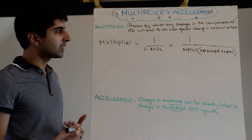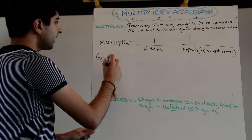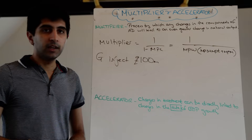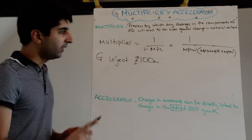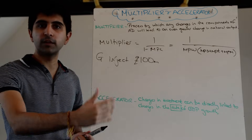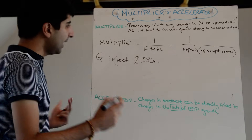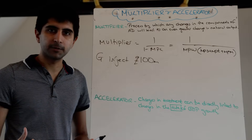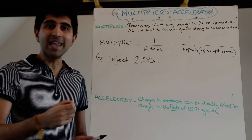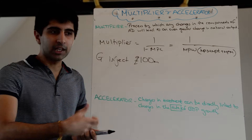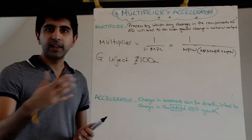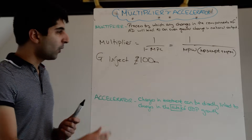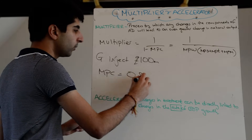Let's take an example. Let's say the government decides to inject £100 million into the economy. We know on a diagram that's going to shift AD to the right, but the final effect will not just stop at that increase in growth — there will be a further increase as a result of the multiplier effect. Let's say that from that £100 million, every time income is generated, 80% of that income is spent. So we're going to assume that the marginal propensity to consume is therefore equal to 0.8.